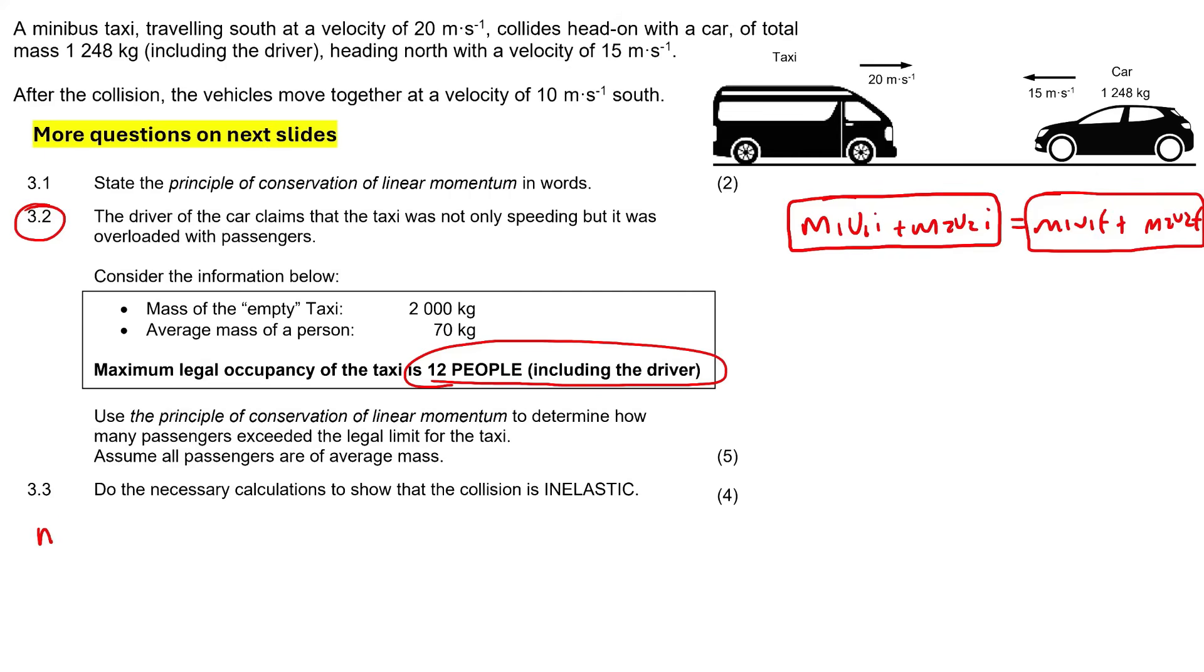It says that use the principle of conservation of momentum to determine how many passengers exceeded the legal limit for the taxi. That's so cool. Assume all passengers are of average mass. So what we can do then is we can just go M1V1 initial plus M2V2 initial equals to M1V1 final plus M2V2 final. We know that after the collision, the vehicles move together. So if you want to combine these two together, you can. Some learners like to do that. You can write it as M1 plus M2, and then in brackets, you can just say V final. I'm just going to keep it separate. But I know that the velocity final of the taxi is going to be the same as the velocity final of the car. So I'm rather just going to call it V final and V final because these two velocities are going to be the same.